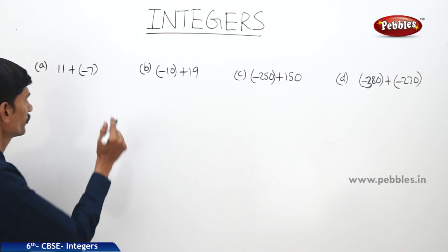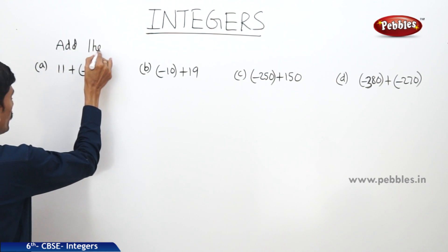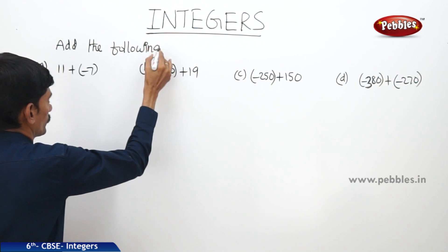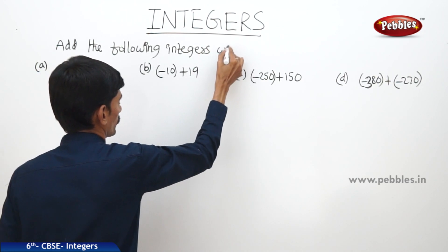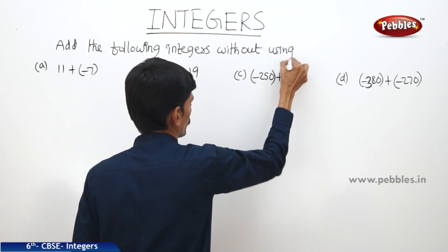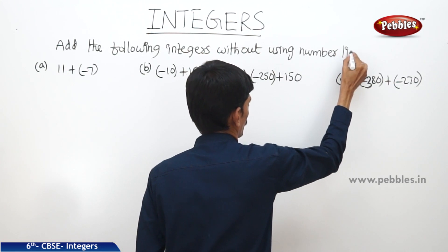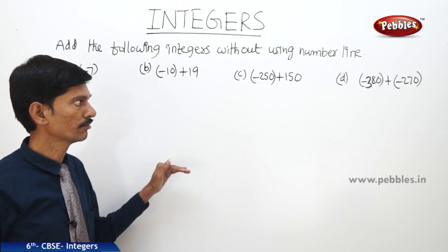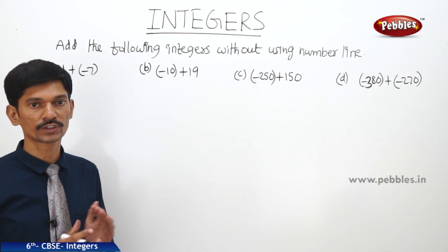Now let us see the next question: add the following integers without using a number line. It is difficult to add integers always using the number line, so we can also add integers without using one.